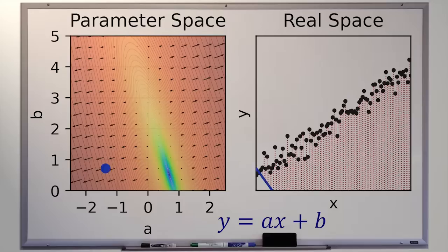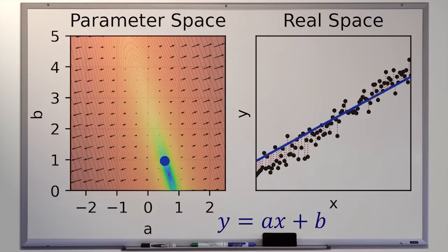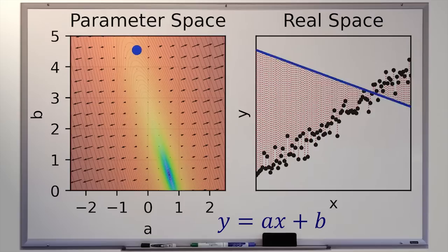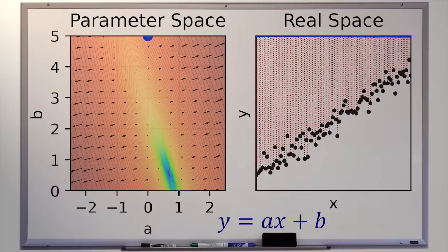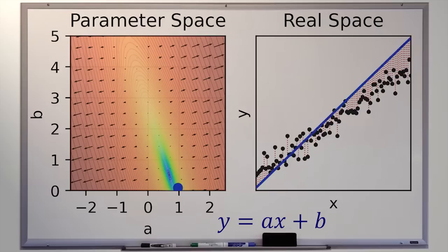As you look at the dot moving around in the AB parameter space, notice that how high up it is on the B axis directly corresponds to the height of the Y-intercept of the line it corresponds to. On the left plot, the height of the blue dot equals the height of the leftmost side of the line on the right plot. On the A axis, how far left the dot is corresponds to a more negative slope, and how far right corresponds to a more positive slope — at A equals zero you get a flat line.